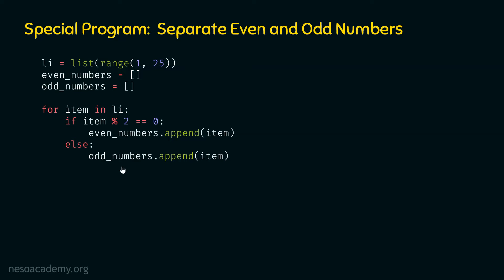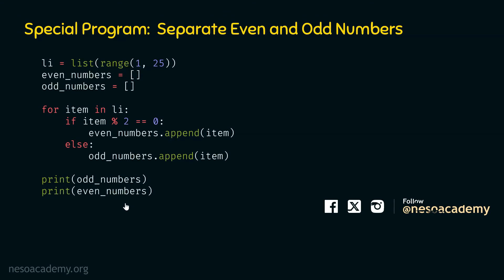With this for loop, we are able to append the items into their respective lists. After completion of the for loop, the even numbers list will contain all even numbers from li, and the odd numbers list will contain all odd numbers from li. Then we print odd numbers and even numbers — first all the odd numbers, then all the even numbers.